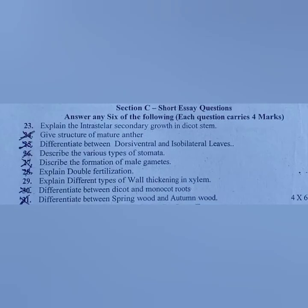Section C. Short essay questions. Answer any six of the following, each question carries four marks. 23. Explain the intrastellar secondary growth in dicot stem. 24. Give structure of mature anther. 25. Differentiate between dorsiventral and isobilateral leaves. 26. Describe the various types of stomata. 27. Describe the formation of male gametes. 28. Explain double fertilization. 29. Explain different types of wall thickening in xylem. 30. Differentiate between dicot and monocot roots. 31. Differentiate between spring wood and autumn wood.